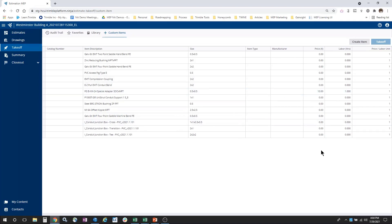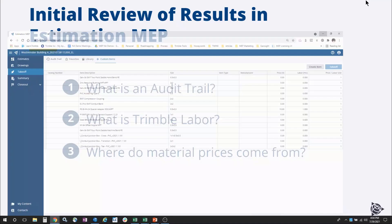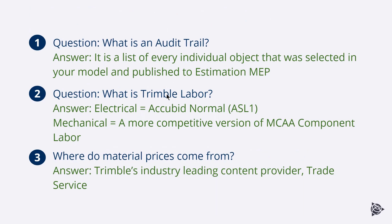This concludes this introduction video. As a quick refresher, let's take a look at the answers to the questions we said we would answer. First, what is an audit trail? The answer is that it's a list of every individual object that was selected in your model and published to Estimation MEP.